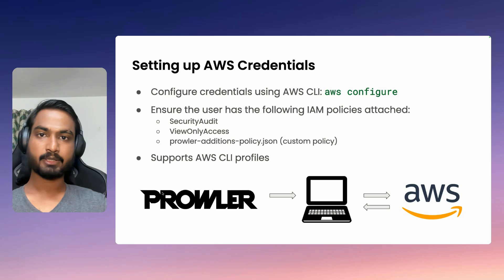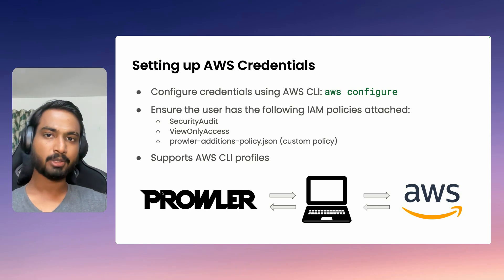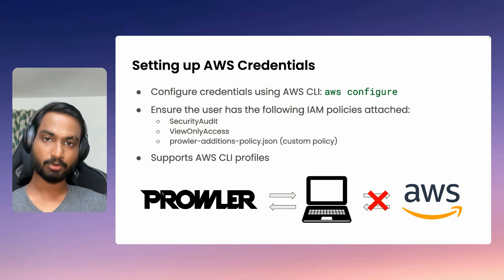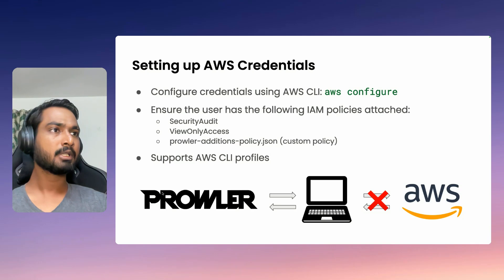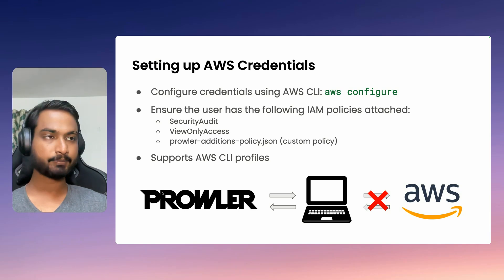Once it gets back the response, it does its own custom logic on top of the response and determines if it is compliant, secure, or insecure. A common issue you might face is Prowler not being able to fetch all the resources on your AWS account. The simple debugging step is to just check the credentials. Ensure that the credentials configured on your local system have read-only and list-only access to all the resources. To get the best out of a Prowler scan, you need three policies attached to your user: the managed Security Audit policy, the managed ViewOnlyAccess policy, and a custom policy that you need to create and attach yourself.